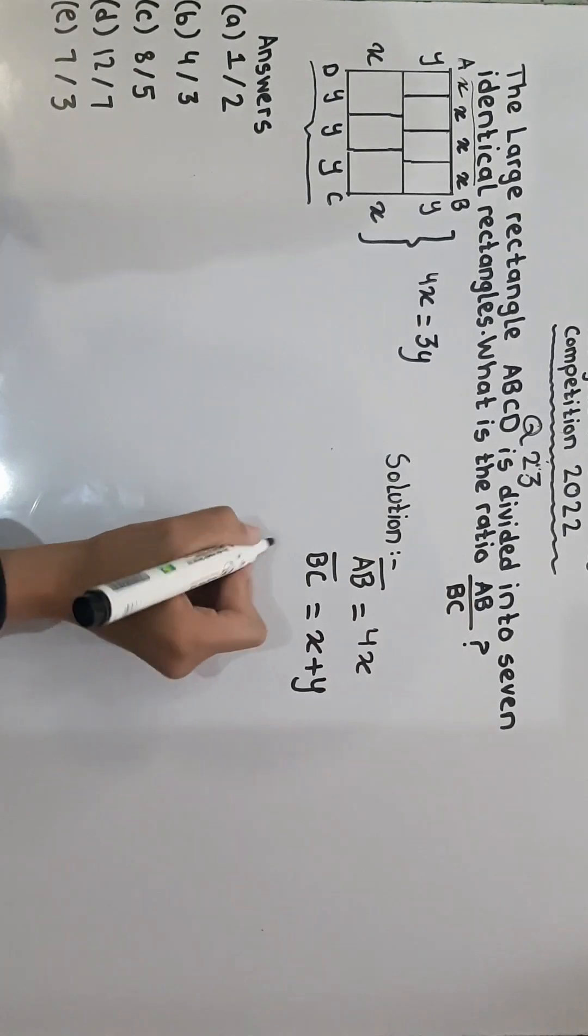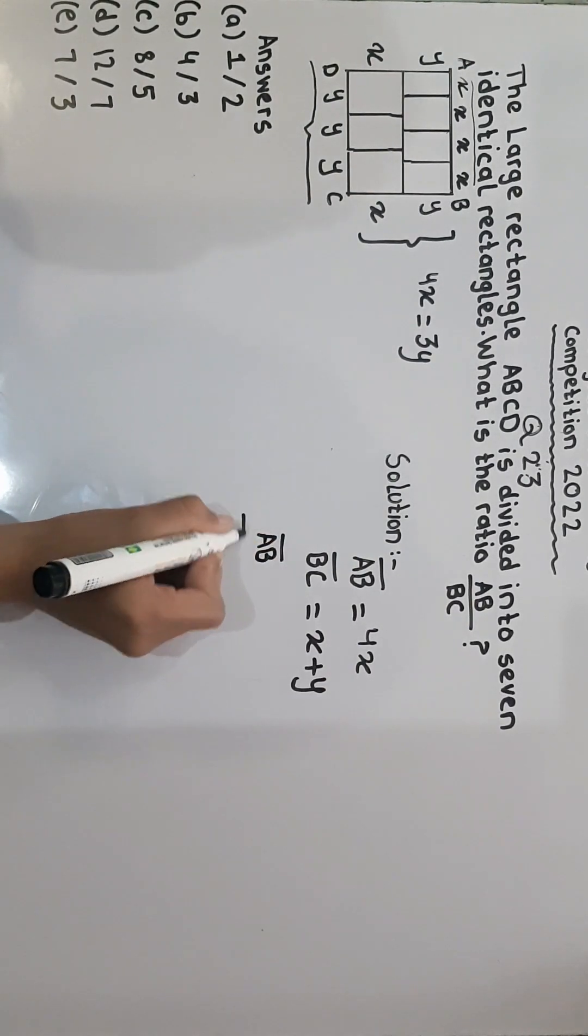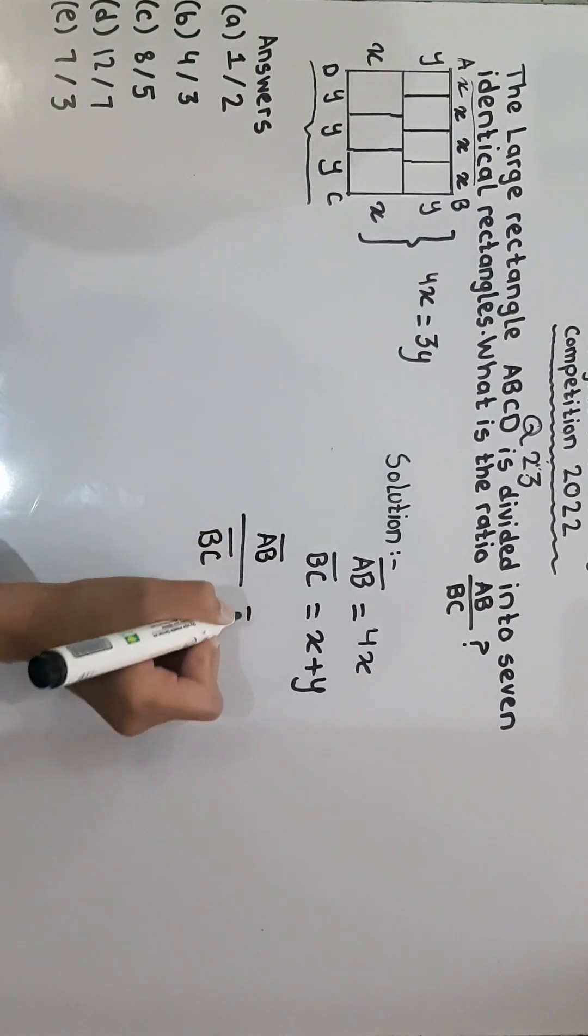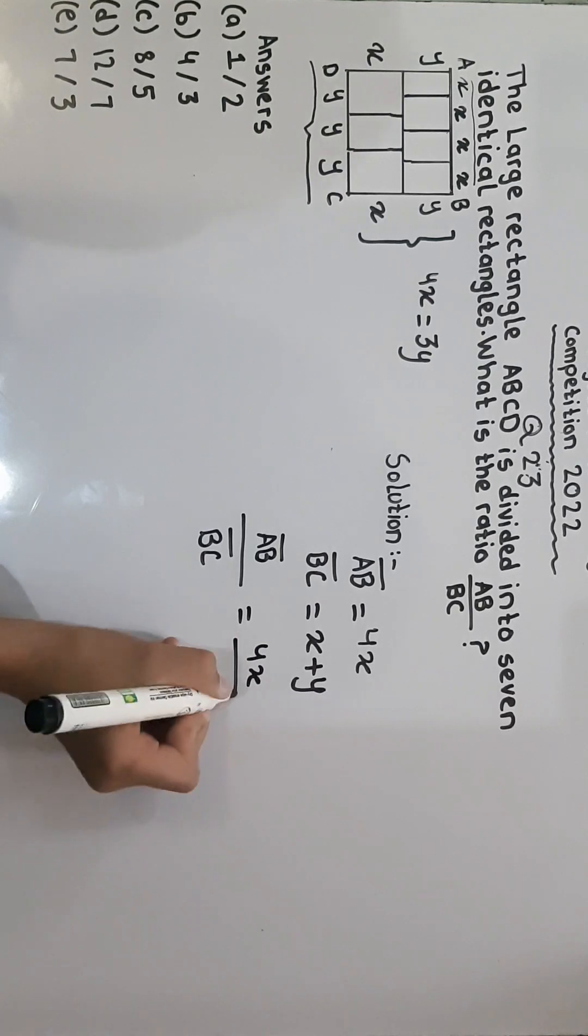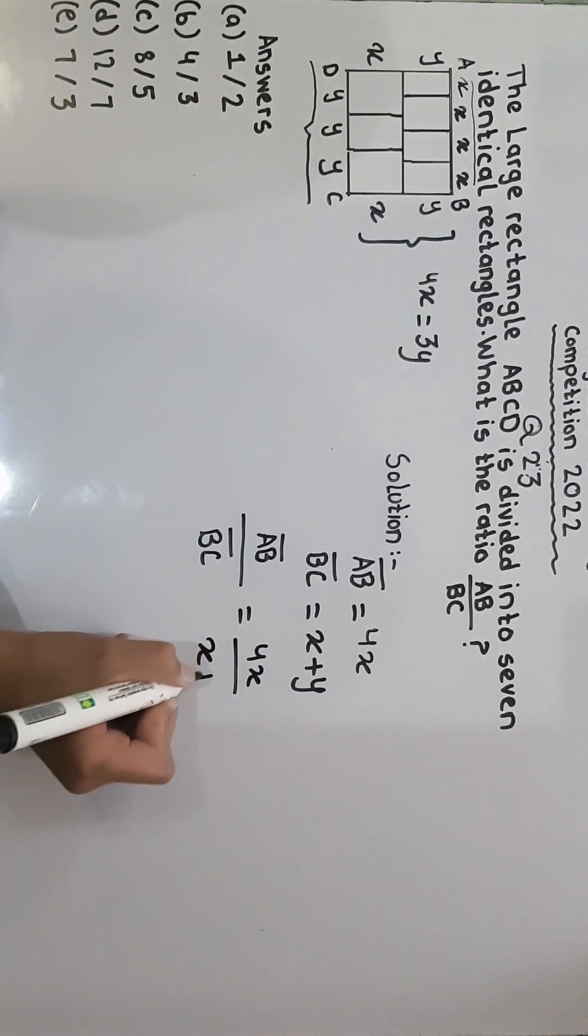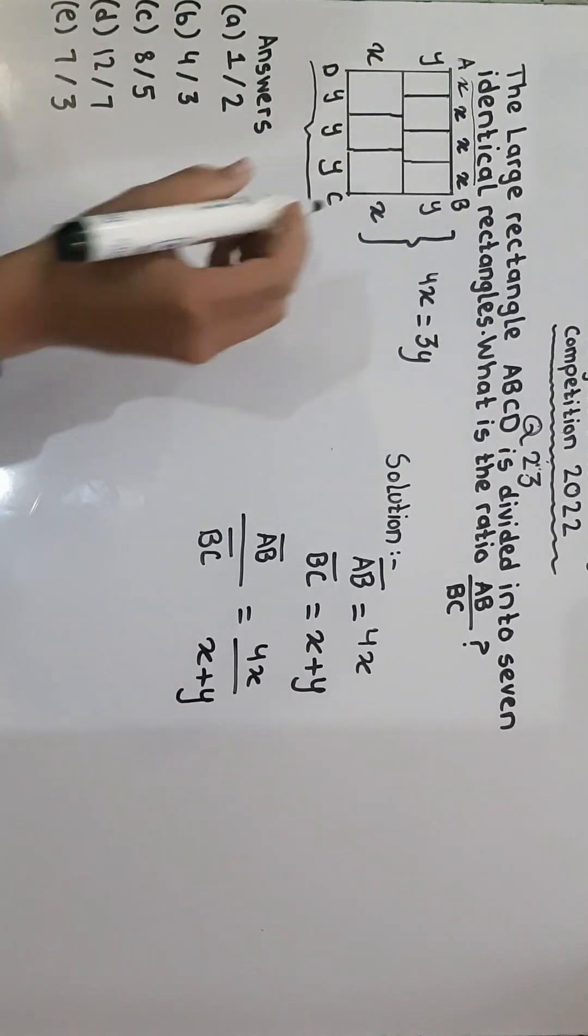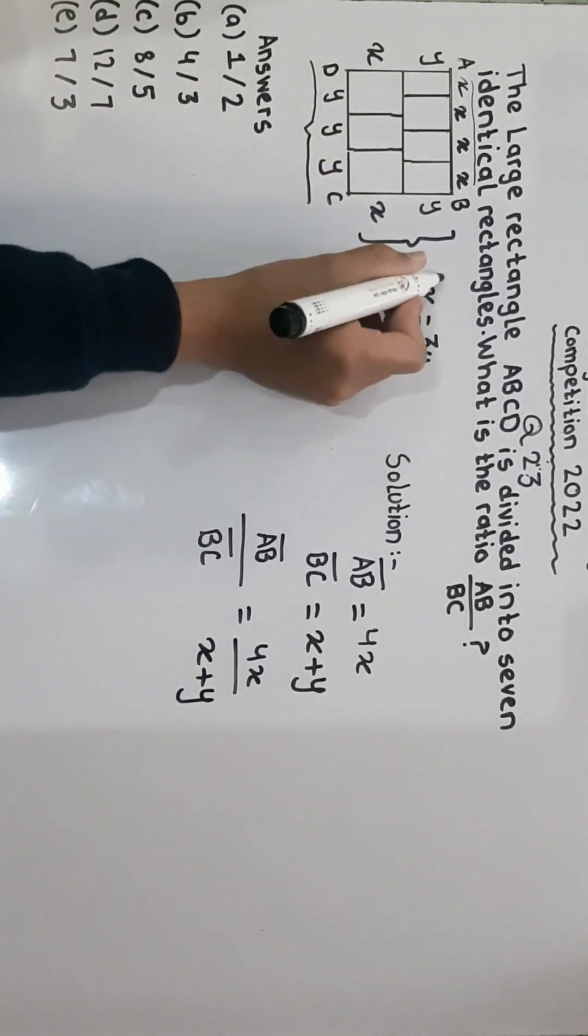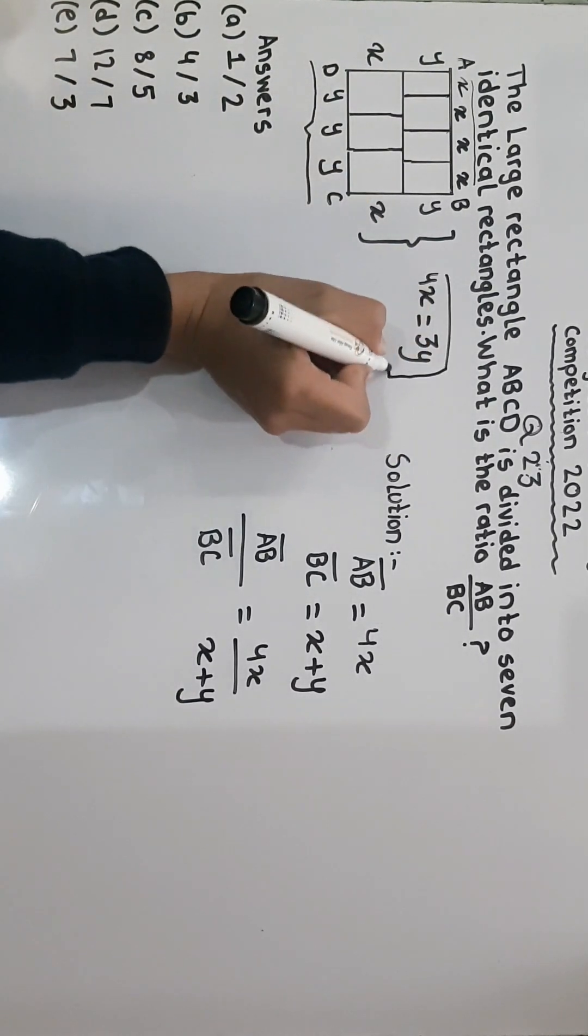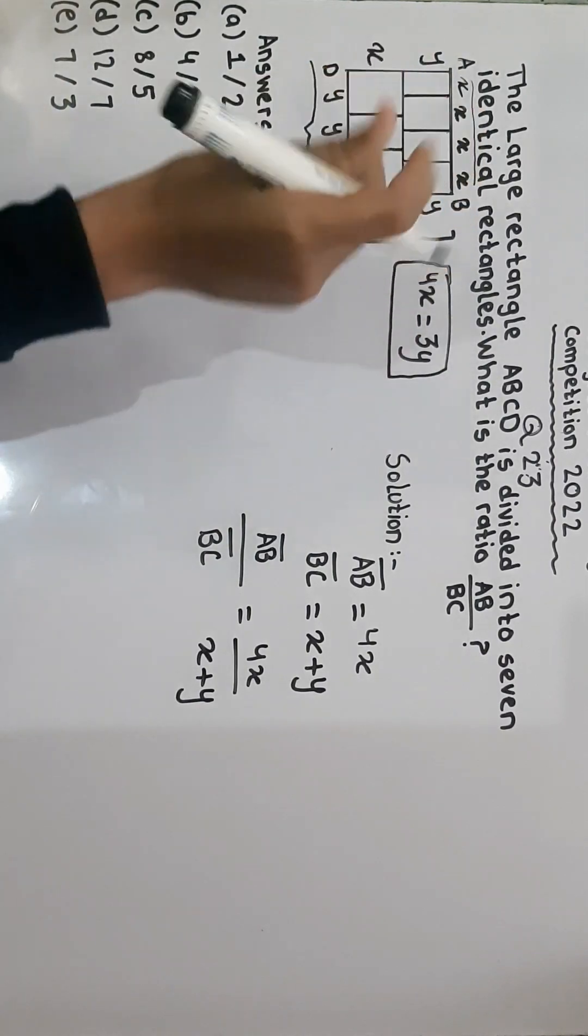We have to find AB divided by BC. So 4X is equal to 4X divided by X plus Y. Now we will use this formula. First we will solve it.